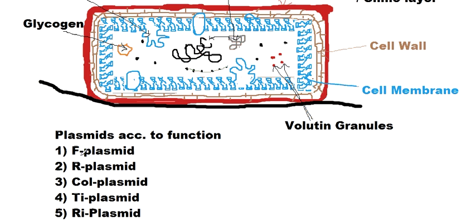The F plasmid stands for the fertility plasmid. The bacteria which possesses this plasmid — called F+ bacteria — is genetically referred to as a male bacteria, while the bacteria which doesn't have the F plasmid is called a female bacteria. During conjugation, the F plasmid is transferred from the F+ to the F− bacteria, allowing gene recombination to take place. So the F plasmid plays a role in determining the sex of the bacteria.